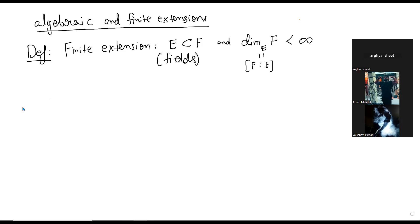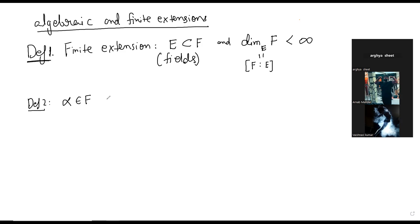Definition two is algebraic extension. So, α in F is algebraic over E — we are always assuming E is a field contained in F, but not necessarily a finite extension; that was just one definition.